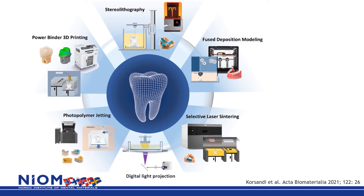3D printing is an additive manufacturing technique, building the restoration layer by layer into a three-dimensional structure. Stereolithography is perhaps the most common technique today and was also the first commercially available technique for 3D printing. Photo-induced polymerization of liquid resin in a tank or vat is performed. The building can be done top-down or bottom-up, and a laser is a common light source, with printing done pixel by pixel.